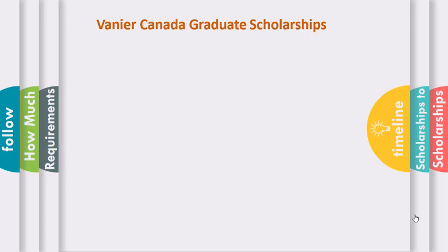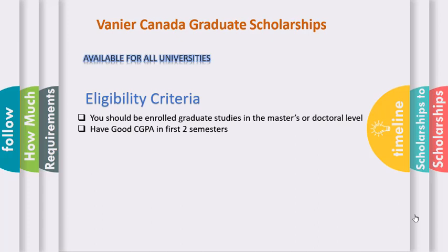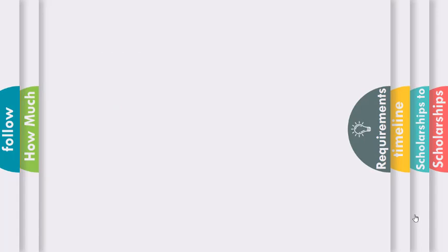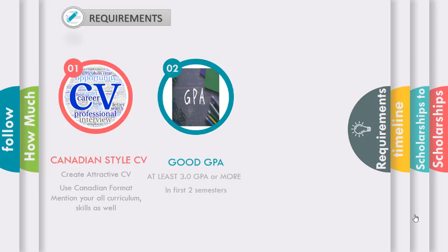For the Vanier Canada Graduate Scholarship, it is available for all universities and colleges. You should be enrolled in graduate studies at the master's or doctoral level and have a good CGPA in your first two semesters. Requirements include: preparing a Canadian-style CV, having at least a 3.0 CGPA or more in your first two semesters when enrolled in master's or PhD.